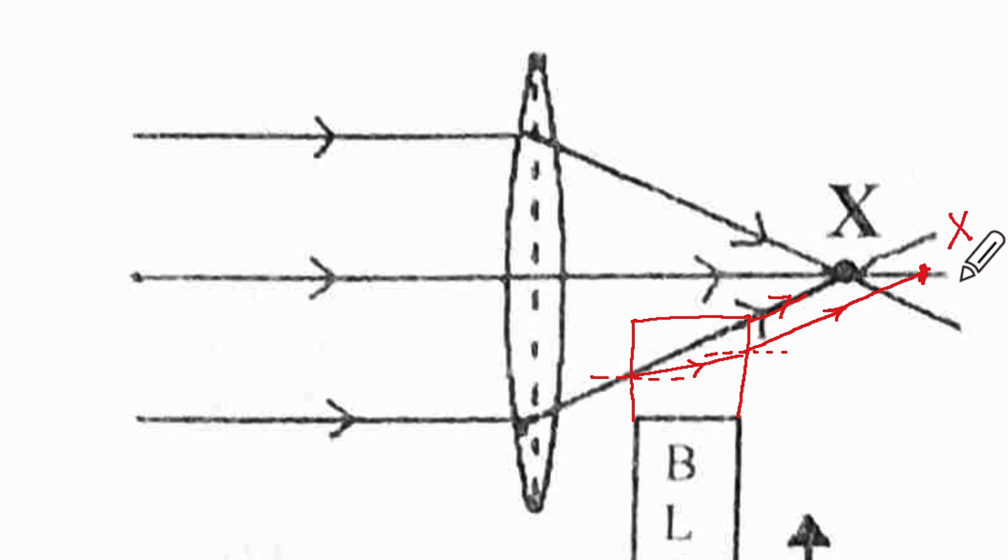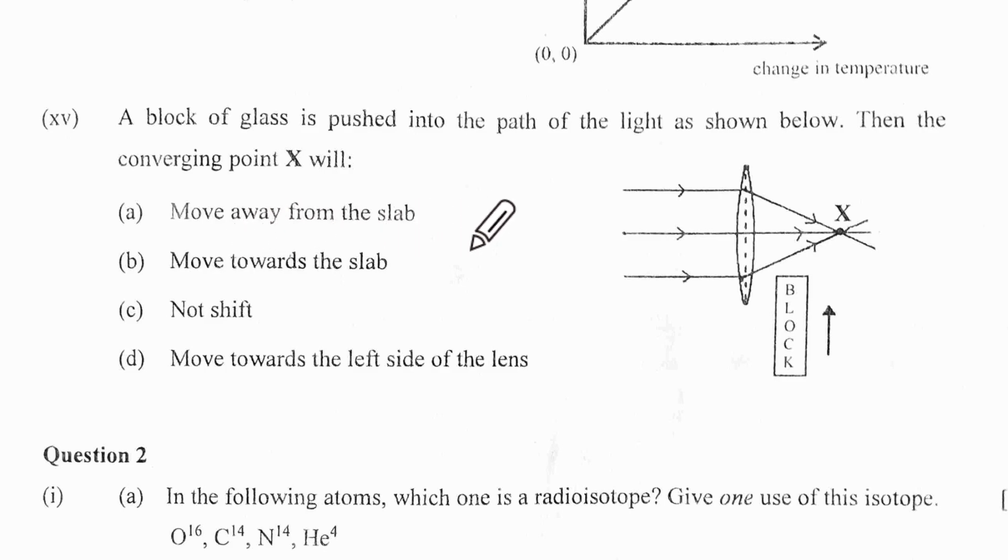Now let us look at the options. A says it moves away from the slab, towards the slab. No shift. Moves towards the left side of the lens. Now left side of the lens is this way. So definitely not this. No shift is not right.